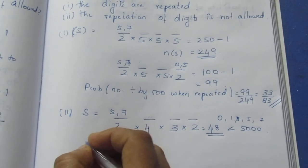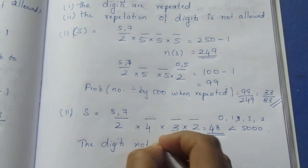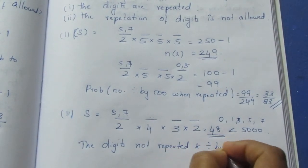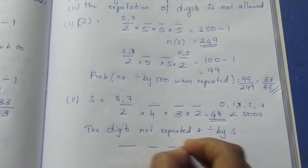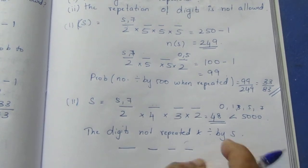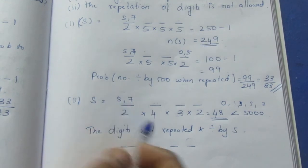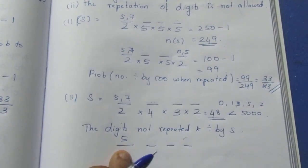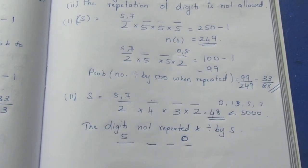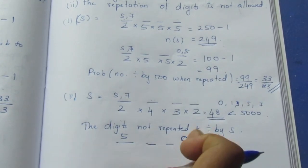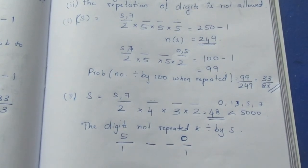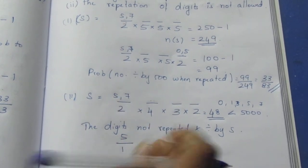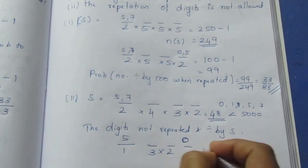Digits not repeated, divisible by 5. For divisibility by 5, the unit digit must be 0 or 5. We consider two cases: last digit is 0, or last digit is 5. If last digit is 0, the first digit can be 5 or 7 (2 ways), then the remaining two places from 3 digits: 3 × 2 = 6 ways. That gives 2 × 3 × 2 × 1 = 12 ways.